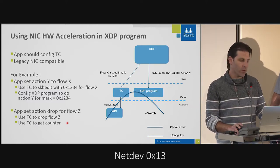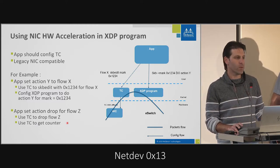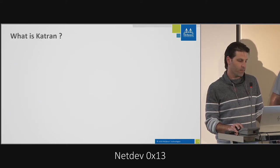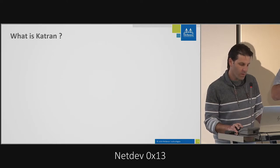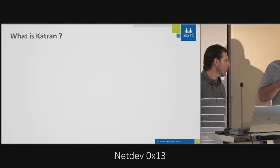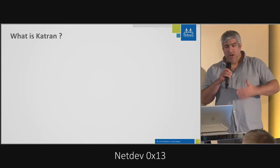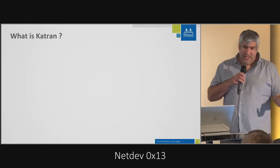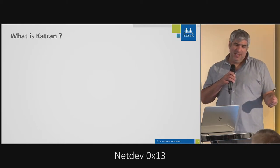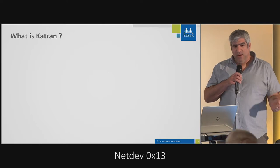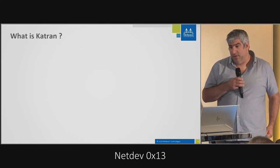All the statistics of those flows will go to the software through TC. Usually XDP programs can drop around 20 million packets per second per core, but in this case you can drop 100 million packets per second with zero cores.